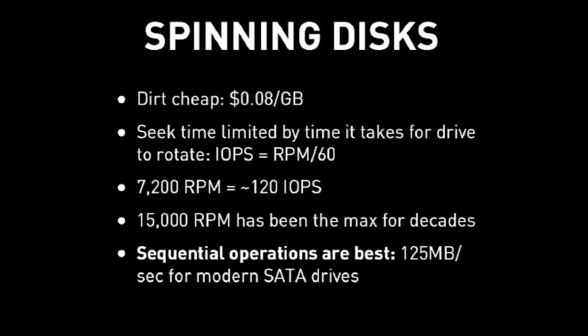Let's talk a little bit about spinning disks. They are dirt cheap — about eight cents a gigabyte now, which is ridiculous. But their seek time is extremely limited, basically just waiting for the disk to spin around to the data point. It's been this way for a very long time. A 7200 RPM drive does 120 IO operations per second. 15,000 RPM is the fastest spinning disk you can get and has been the max for decades. They're alright at sequential operations though — you get about 125 megabytes a second on a modern 7200 RPM commodity drive. That was the world in which Cassandra was built.